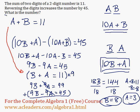So what is the number? Remember that the value of the number was 10A plus B. So it's just going to be 10 times 3, which is 30, plus 8, which is 38. And that is our final answer.